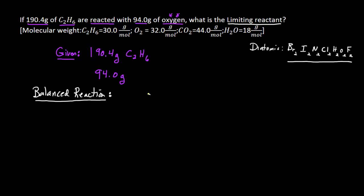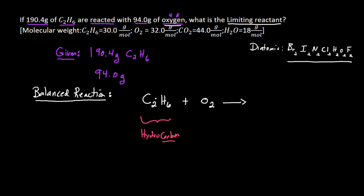I'm given C2H6, so I write out C2H6, then a positive sign — that's indicative of a reaction between two different molecules — with 94.0 grams of oxygen. Remember, we're not going to write oxygen as O; we're going to write it as O subscript 2. Hopefully we recognize that C2H6 is a hydrocarbon — a molecule that contains both carbon and hydrogen.